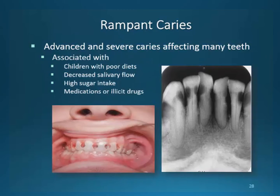Rampant decay is advanced to severe decay affecting children with poor diet. We see decay in patients taking methamphetamines because of the lack of salivary flow that occurs from the use of the drug and the change in the pH of saliva. High sugar intake and medication can also bring about this situation. The elderly sometimes face this condition due to recession and medications that affect salivary flow. Illicit drugs have also been added to this classification.